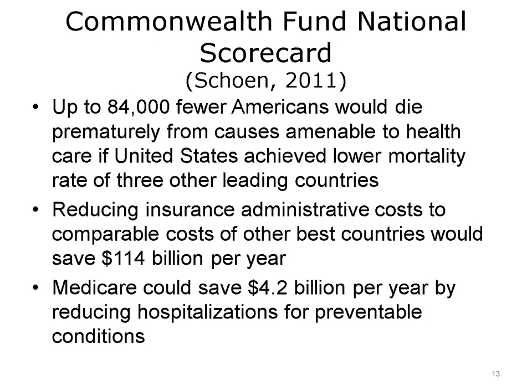Other studies, such as that done by Schoen and colleagues with the Commonwealth Fund, have found that the quality of care for patients with chronic diseases is no better, and in many ways is worse in the United States than in other developed countries. Their most recent national scorecard found that up to 84,000 fewer Americans would die prematurely if the United States achieved the lower mortality rate of three other leading countries. Reducing insurance administrative costs to the level in other best countries would save $114 billion per year.